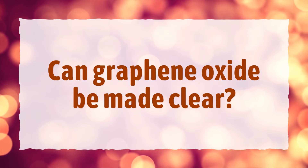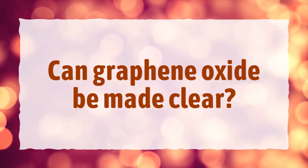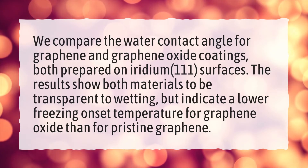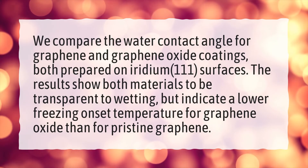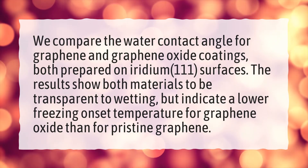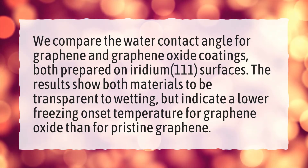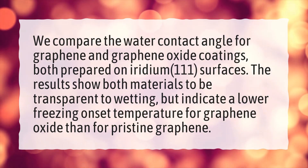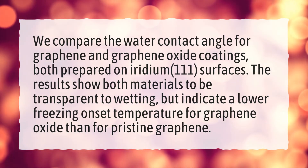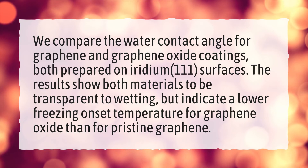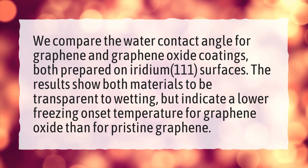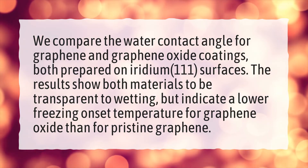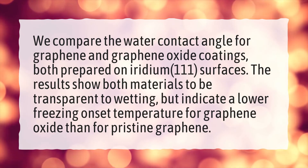Can graphene oxide be made clear? We compare the water contact angle for graphene and graphene oxide coatings, both prepared on iridium-111 surfaces. The results show both materials to be transparent to wetting, but indicate a lower freezing onset temperature for graphene oxide than for pristine graphene.